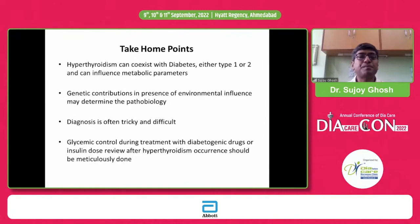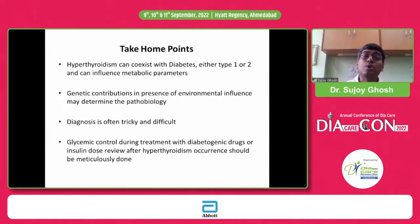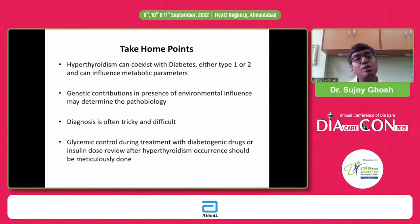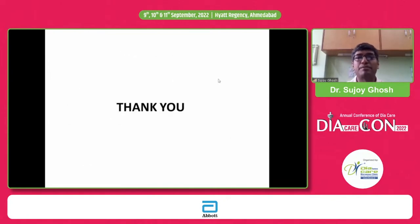In terms of take-home messages: hyperthyroidism can co-exist with both type 1 and type 2 diabetes, more commonly in type 1. There are certain genetic factors which are co-transmitted. Diagnosis can be tricky and difficult — remember, both conditions need to be managed and treated simultaneously. Certain drugs might have to be avoided and there are drug interactions. Some parameters we look at for complications might be falsely positive or falsely negative, and HbA1c might be falsely low in individuals with hyperthyroidism.